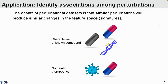The applications of these data sets — there are a couple different things you can do with them. For example, you can characterize unknown compounds by taking the signature of an unknown compound and identifying compounds that produce similar changes or genetic reagents. You can nominate therapeutics for a disease state. And these analyses require identifying similar signatures.